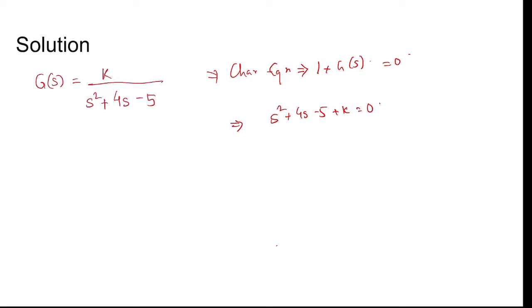Forming the Routh table: s², s¹, s⁰. For s², we have 1 and then k - 5 in the second column. The coefficient of s¹ is 4, and then this is 0.